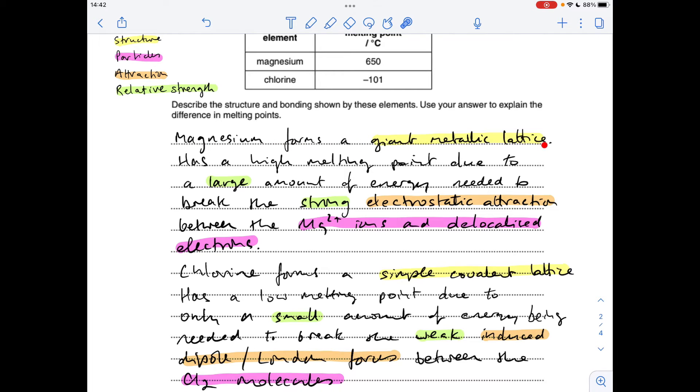So magnesium forms a giant metallic lattice. It's got a high melting point due to a large amount of energy needed to break the strong electrostatic attraction between the magnesium 2+ ions and delocalized electrons.